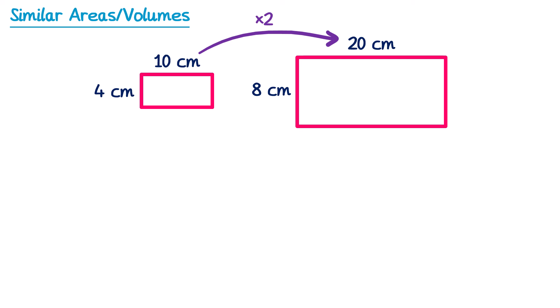But does this apply to the area? The area of the left rectangle is 10x4, which is 40cm squared. For the right rectangle it's 20x8, which is 160cm squared. We can see that whilst the lengths have been doubled, the area hasn't been doubled — in fact it's been multiplied by 4. 40 times 4 gives you 160.